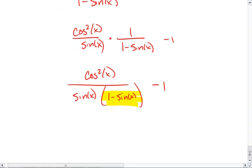So what we're going to do is we're going to multiply this fraction by 1 plus sine of x over 1 plus sine of x.